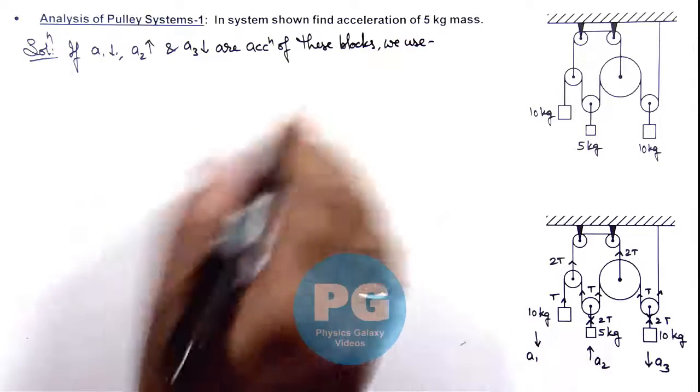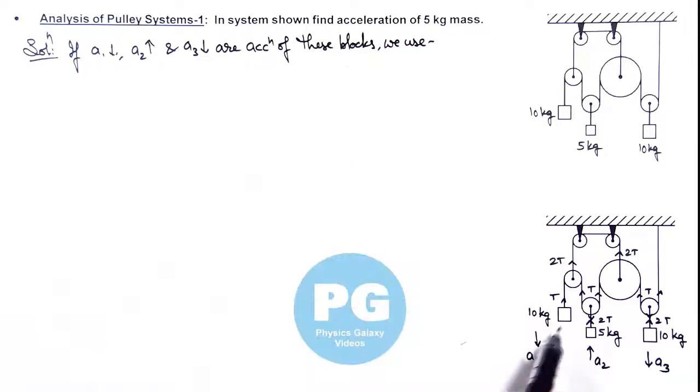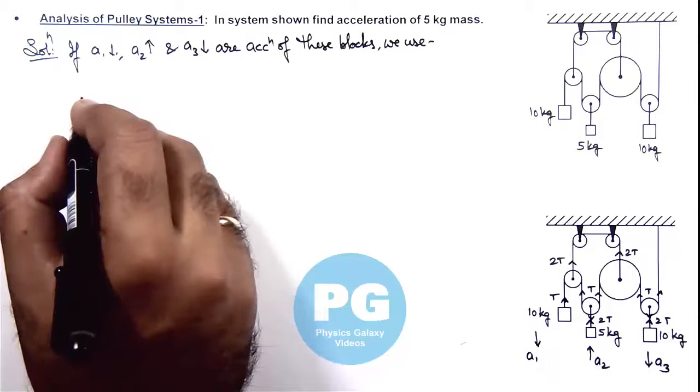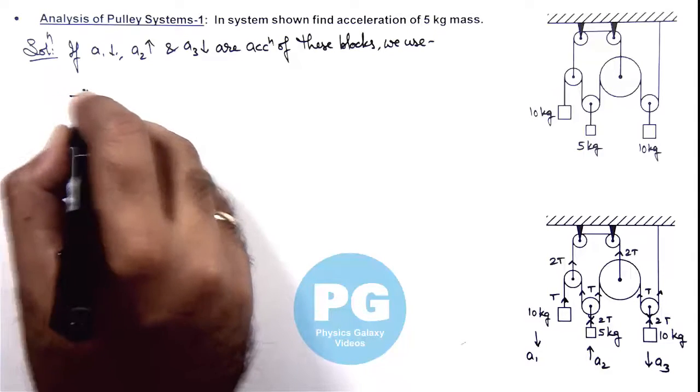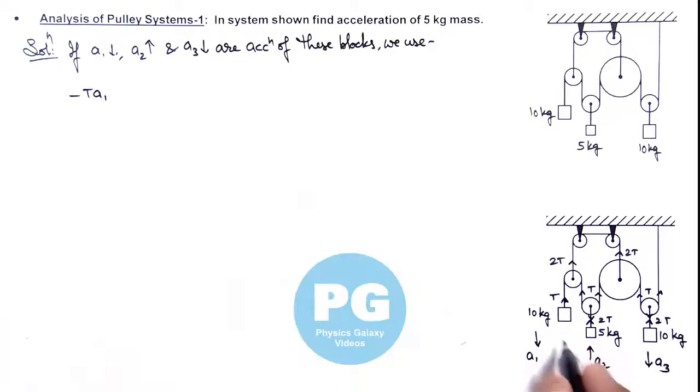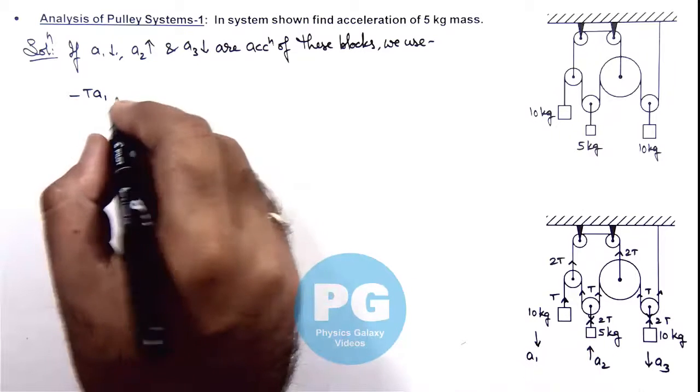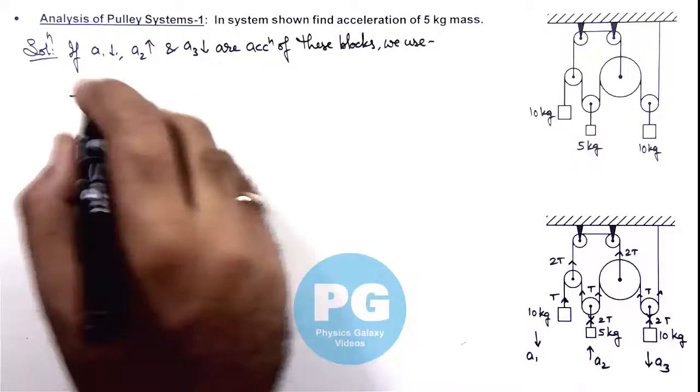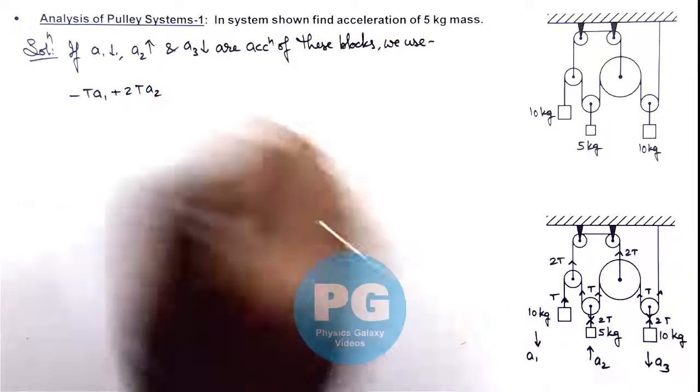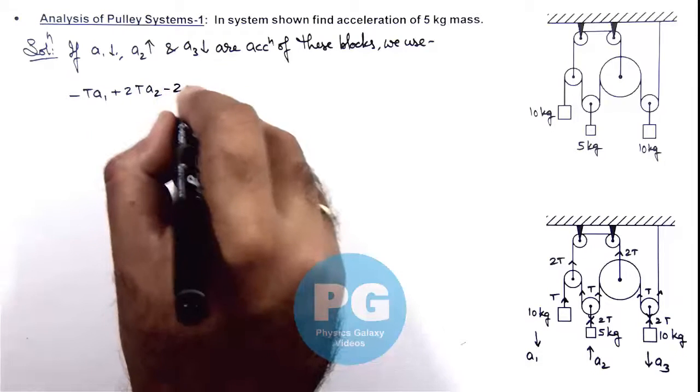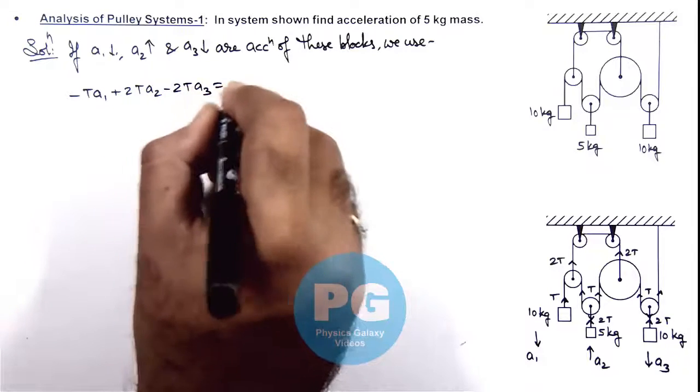We can use the virtual work method, where the total work done by the tensions on the blocks is equal to zero. For the 10 kg block going down, work done by tension will be minus T·a_y1. Here I am assuming the displacement will be proportional to the acceleration for the same time.